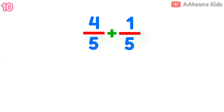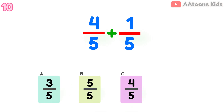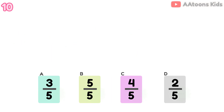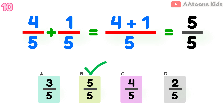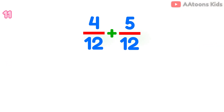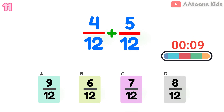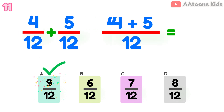Add the fractions: 4 over 5 plus 1 over 5. Add the fractions: 4 over 12 plus 5 over 12. The answer is 9 over 12.